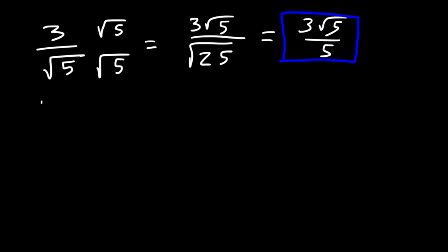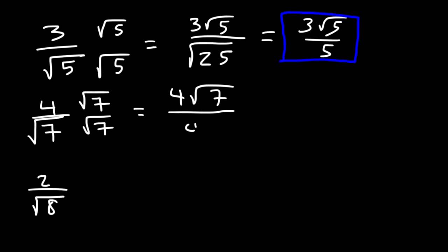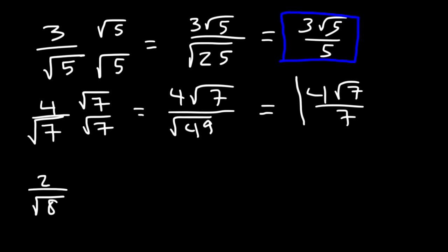Try these two examples — go ahead and simplify the expression and rationalize the denominator. Feel free to pause the video. In the first example, all we're going to do is multiply the top and the bottom by the square root of 7. 7 times 7 is 49, and the square root of 49 is 7. And so that's it for the first example.